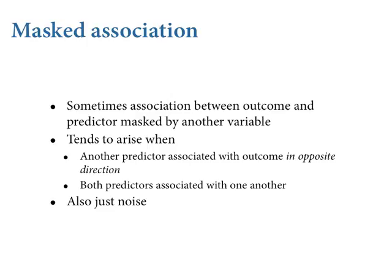Often we have an association between some outcome and a predictor, but it's masked by some other variable. The most common case: you have one predictor variable associated with the outcome in the opposite direction of some other predictor. They may both be meaningfully associated with the outcome, since they're associated in opposite directions. And importantly, they're also associated with one another — they tend to cancel one another out.